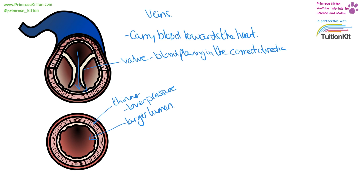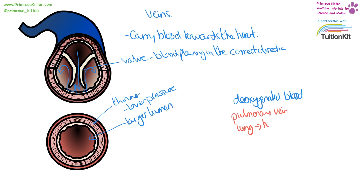Blood can only flow one way through the valve. If it tries to flow backwards through the valve, it is going to get stuck and it won't be able to go backwards. Veins normally carry deoxygenated blood. There is one exception — this is the pulmonary vein, which carries blood from the lungs to the heart. So it's something going in towards the heart and this carries oxygenated blood, ready to be pumped around the rest of the body.